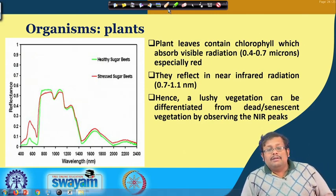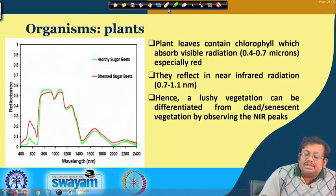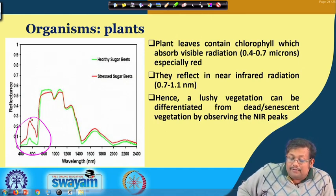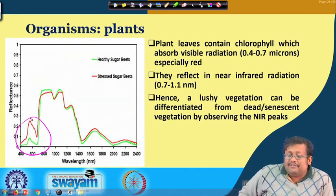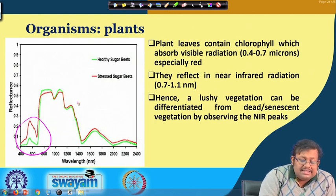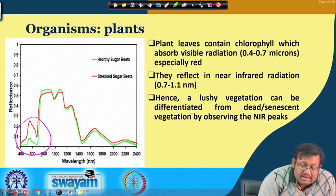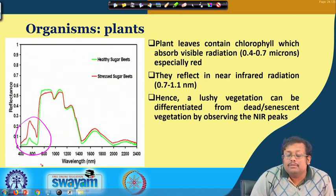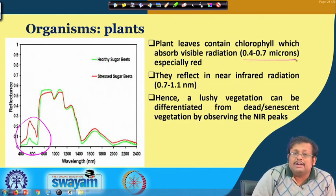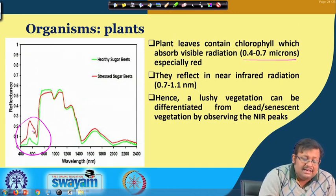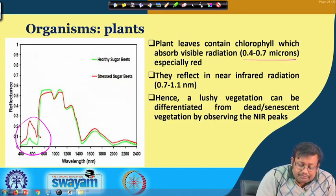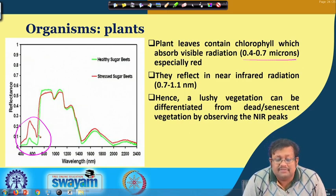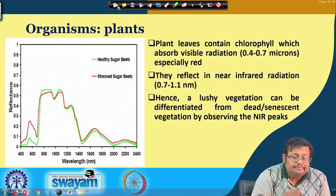Plants are an important component of organisms. Plant leaves contain chlorophyll which absorbs visible radiation — that is 0.4 to 0.7 microns or 400 to 700 nanometers, especially red — and they reflect in the near infrared radiation, that is 0.7 to 1.1 microns. There are two reflectance curves shown: one for healthy sugar beets and another for stressed sugar beets. Healthy sugar beets have more chlorophyll so they absorb more in the visible wavelength, while stressed sugar beets have less chlorophyll and reflect more. In the near infrared region, healthy vegetation reflects more, so lush vegetation can be differentiated from dead or senescent vegetation by observing NIR peaks and reflectance patterns.